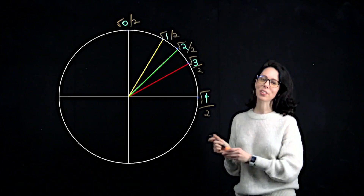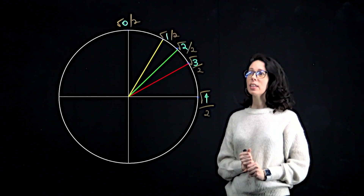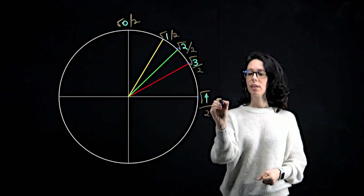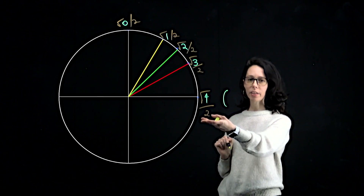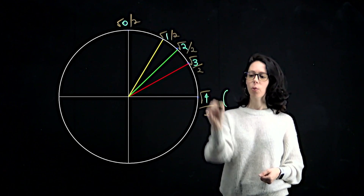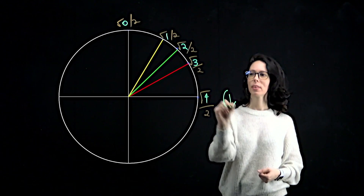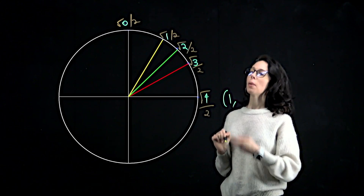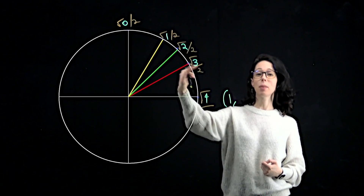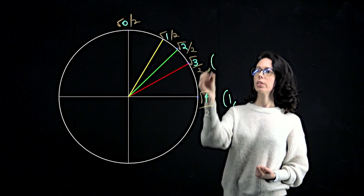Square root of 4 and square root of 0 are sort of silly, so square root of 1. But what each of these gives us is the cosine value on the circle. So the cosine value when theta is 0 is square root of 4 over 2 — that's 1 — as expected because we're 1 unit along the x-axis. For pi over 6, the smallest positive angle here, our cosine value is square root of 3 over 2.